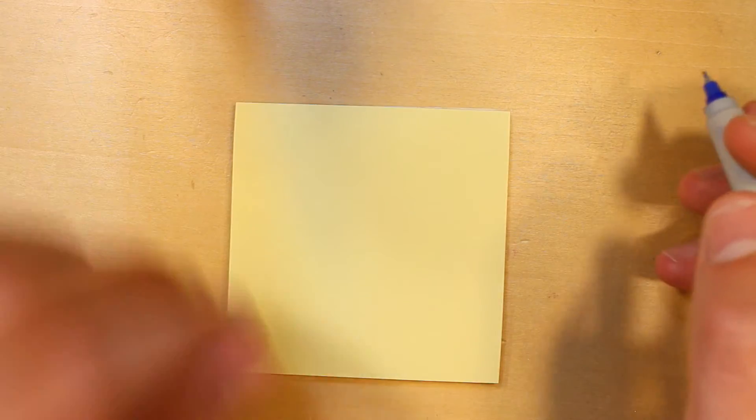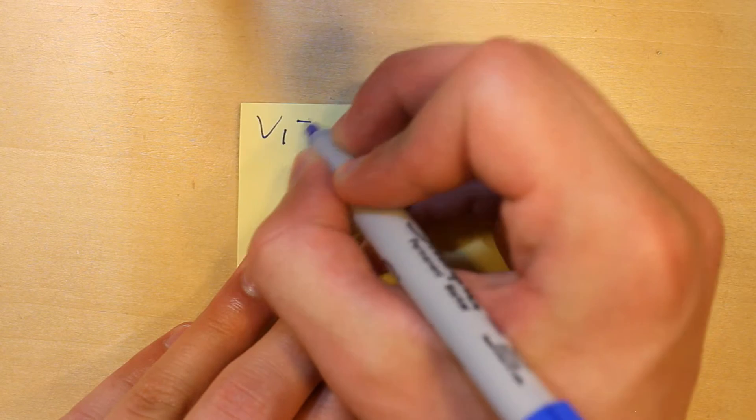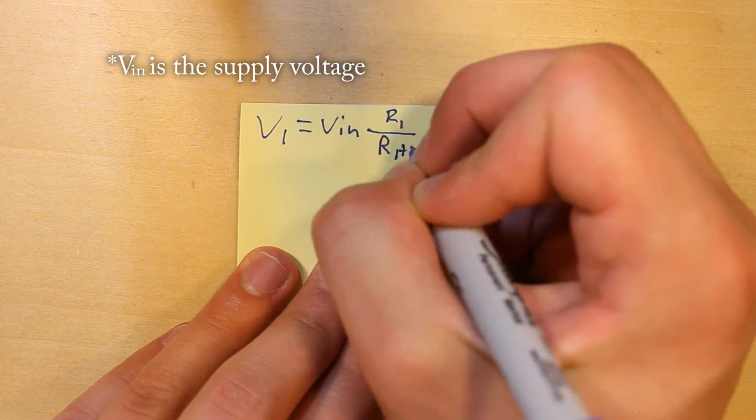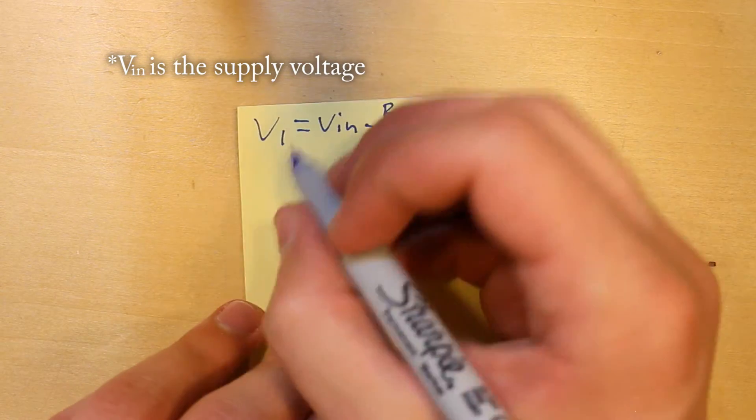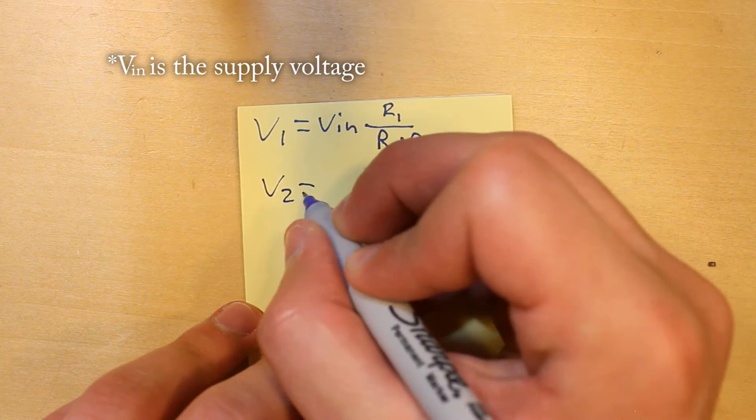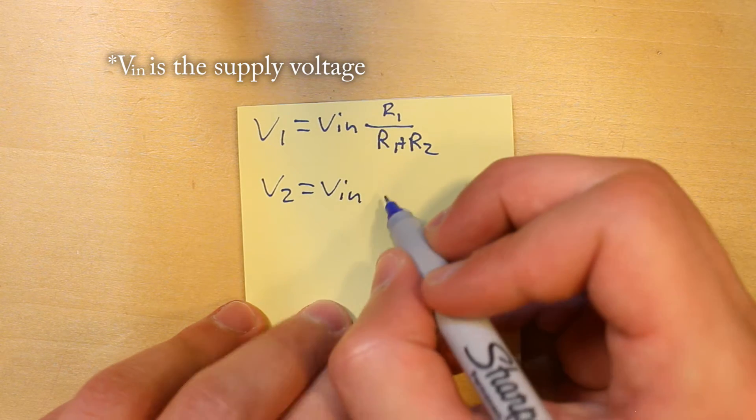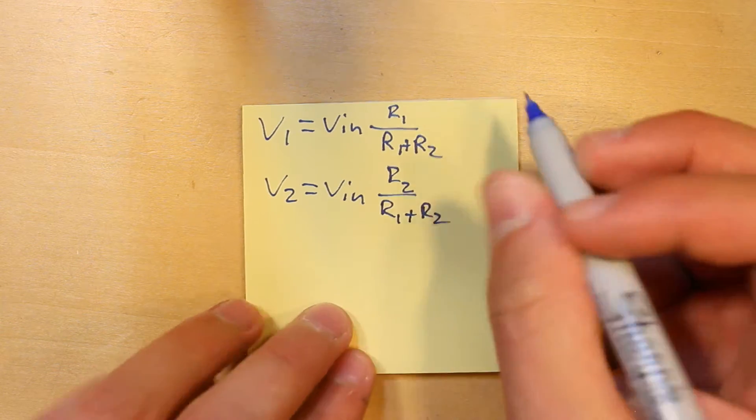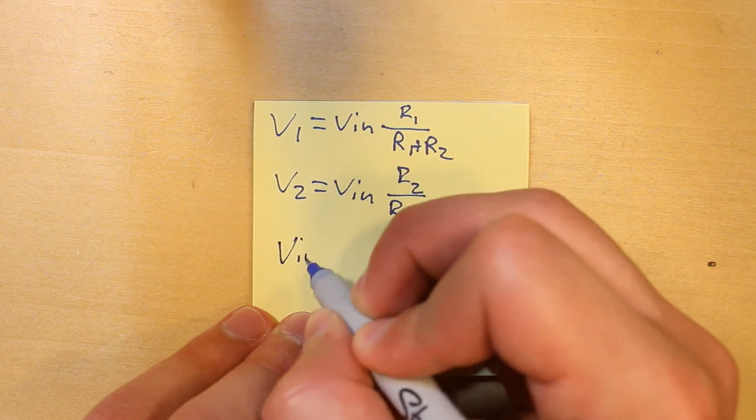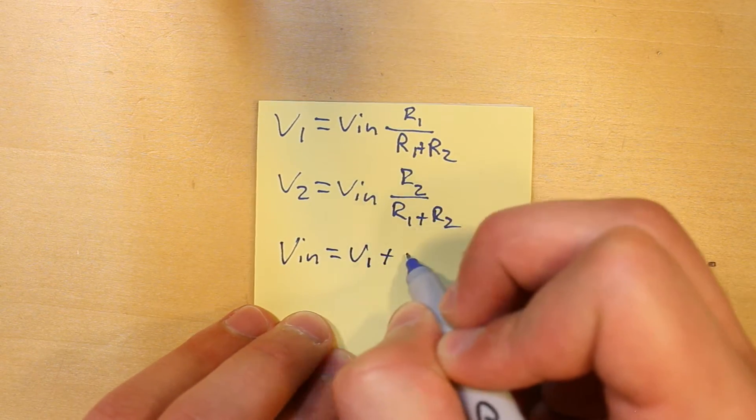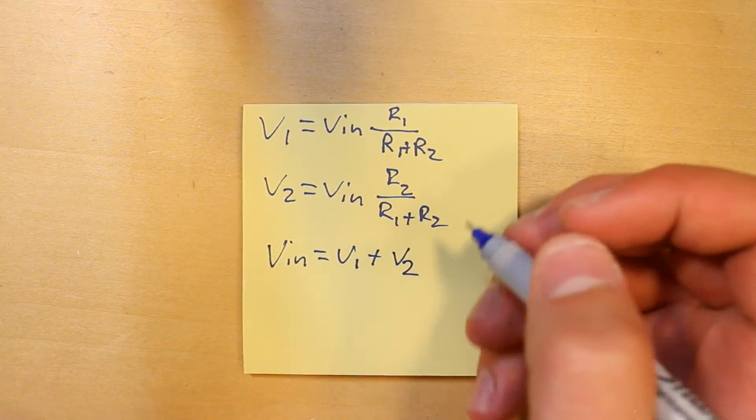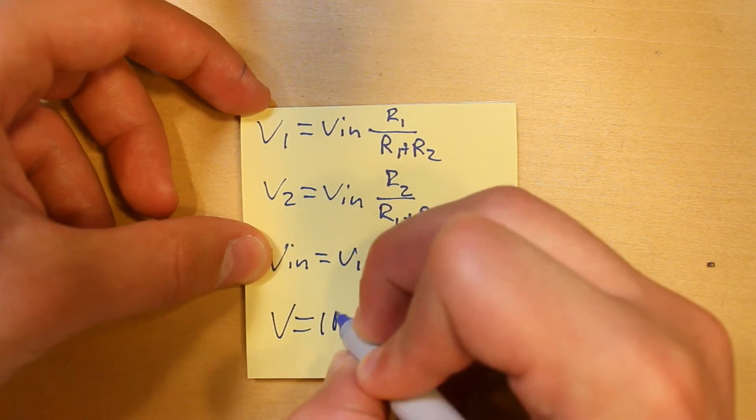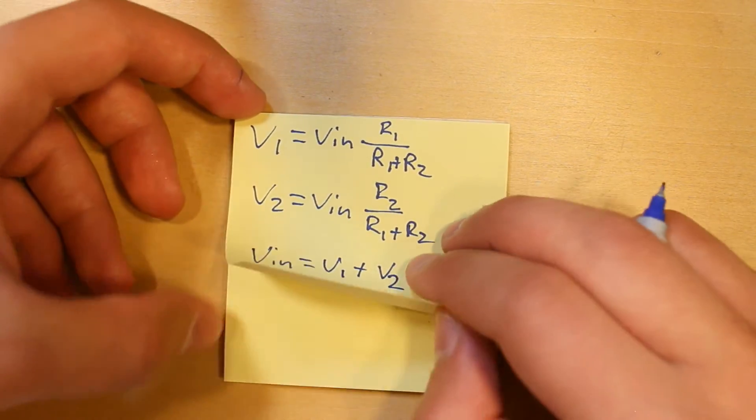Alright, with that all out of the way, I'm going to show you three really important equations. The first one is V1 equals VN R1 over R1 plus R2. The second one is very similar to that one, so V2 equals VN times R2 over R1 plus R2. The third one is VN equals V1 plus V2. I guess a fourth one would be Ohm's law, which is V equals IR, and this is all you'll need for this tutorial.